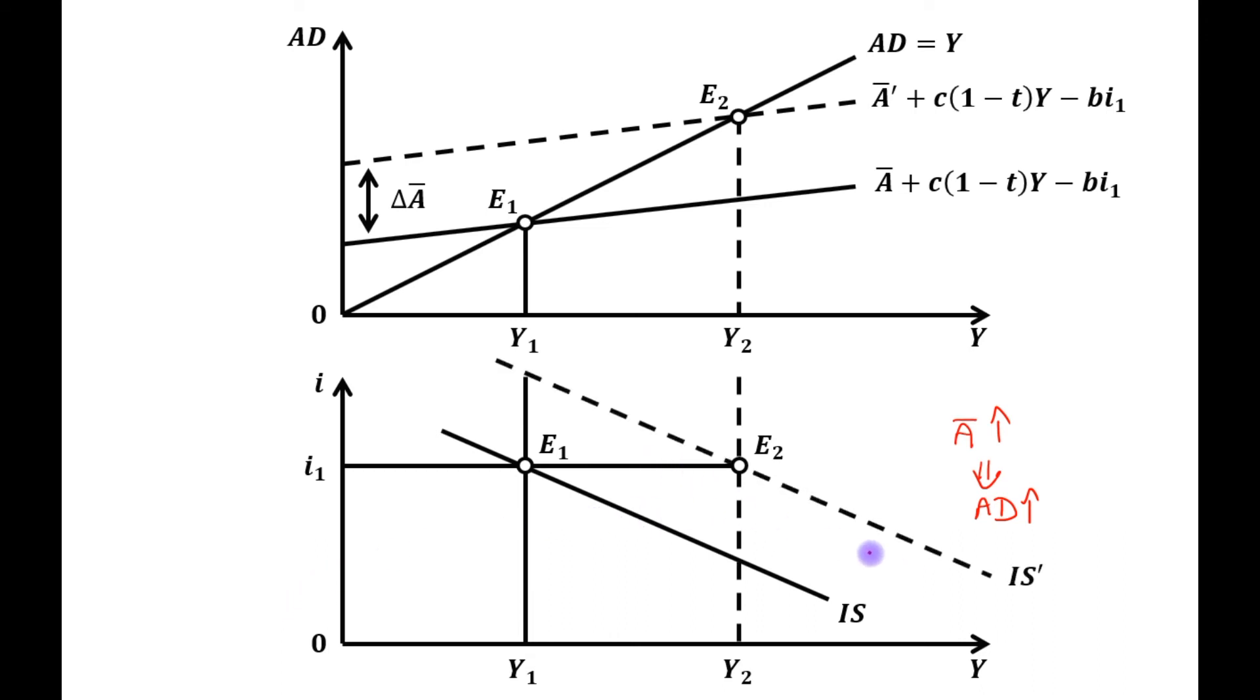This is the new IS curve named as IS dash. And the gap between these two IS curves will be change in Y equals to multiplier times change in A bar.